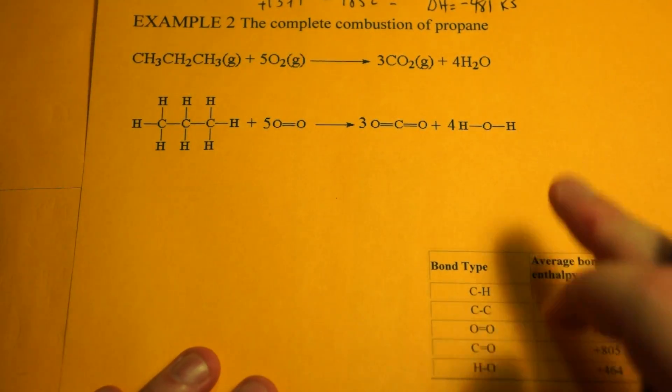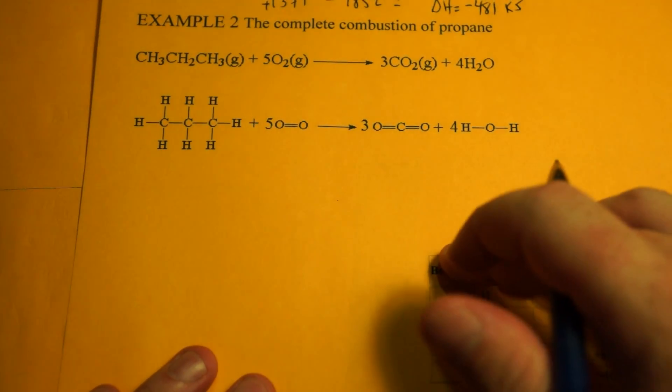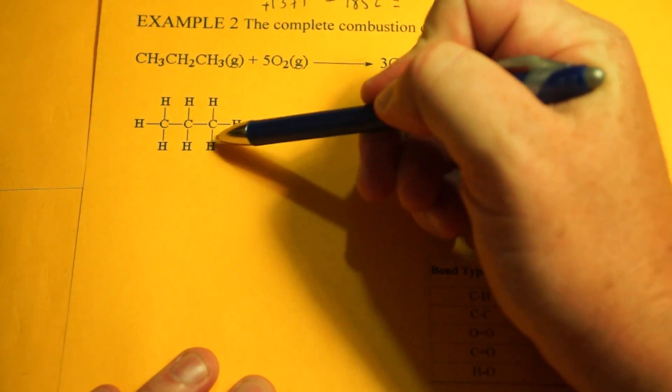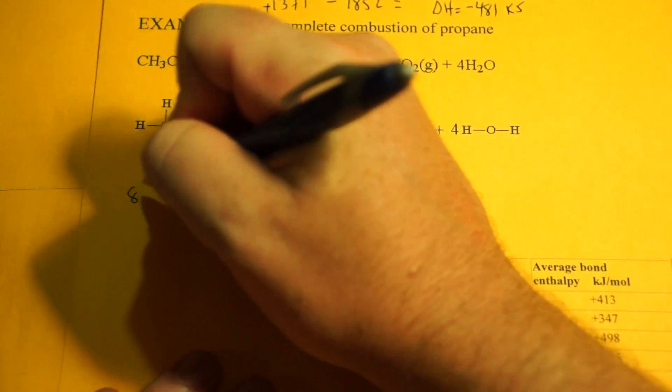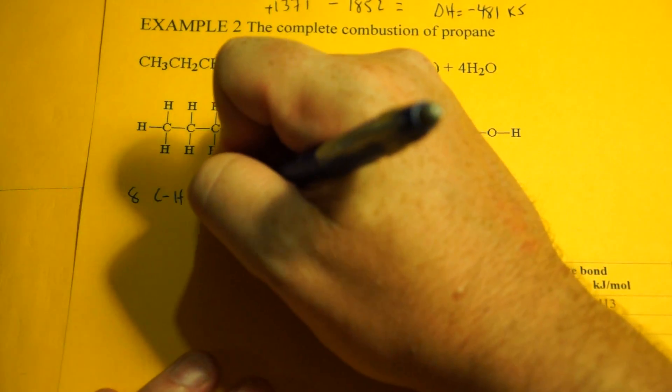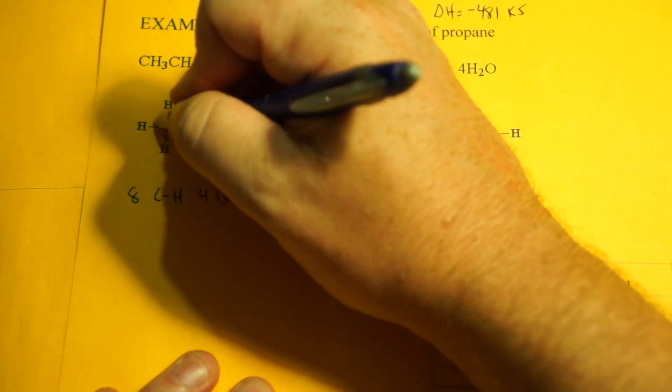I broke it down. You see the bonds already. Now it's time for bookkeeping. So you just got to count. You have 1, 2, 3, 4, 5, 6, 7, 8 CH bonds. And CH is 413. So we'll just mark those off.